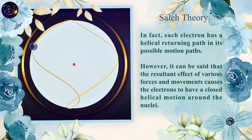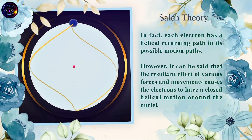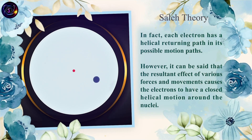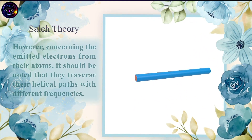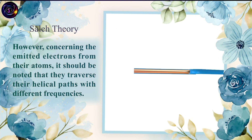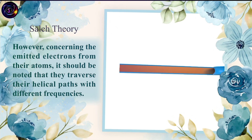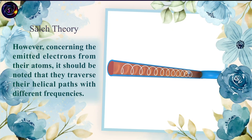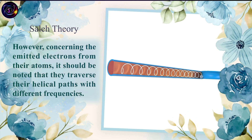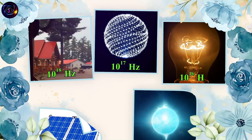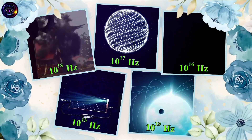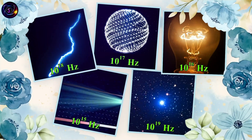In fact, each electron has a helical returning path in its possible motion path. However, it can be said that the resultant effect of various forces and movements causes the electrons to have a closed helical motion around the nuclei. Concerning the emitted electrons from their atoms, it should be noted that they traverse their helical paths with different frequencies.